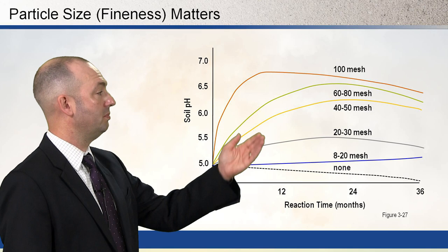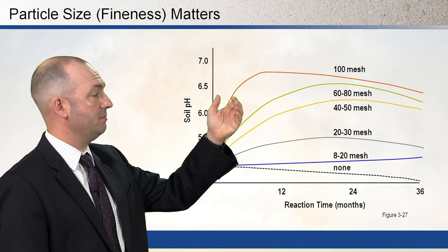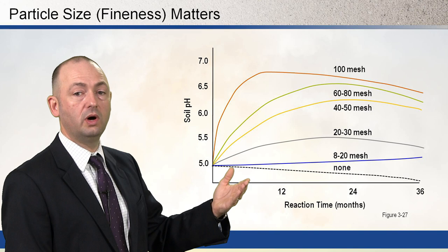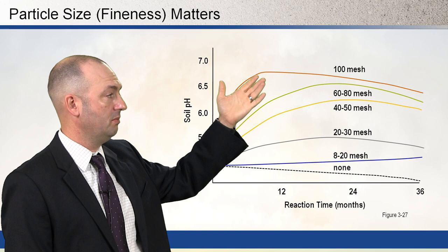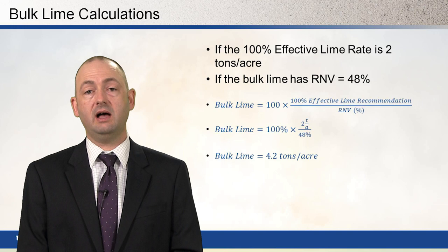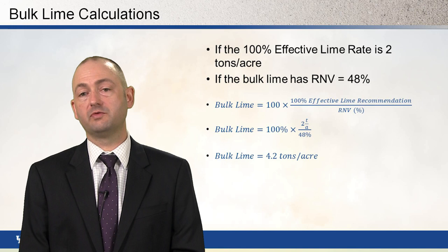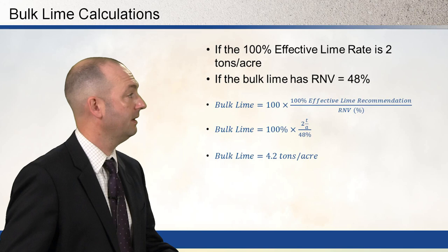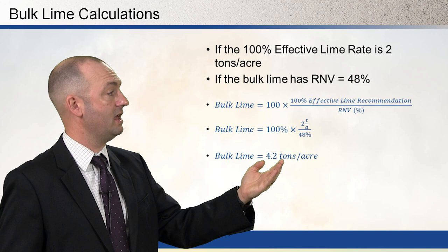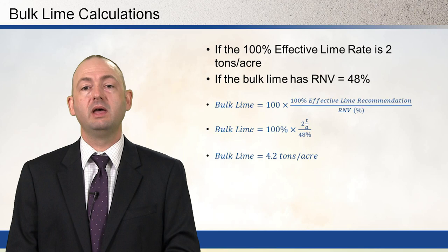A figure shows soil pH on the vertical axis and reaction time on the horizontal axis for different fineness lime materials. Bulk lime reacts very slowly, coarse 8–20 mesh material slowly raises pH, whereas very fine lime raises soil pH rapidly — almost within six months. As a worked example: if the 100%-effective lime rate is 2 tons per acre and the bulk lime has an RNV of 48, we divide 2 tons by 0.48 to get 4.2 tons per acre — roughly twice the effective lime recommendation.